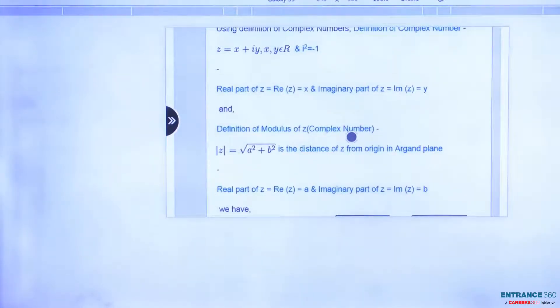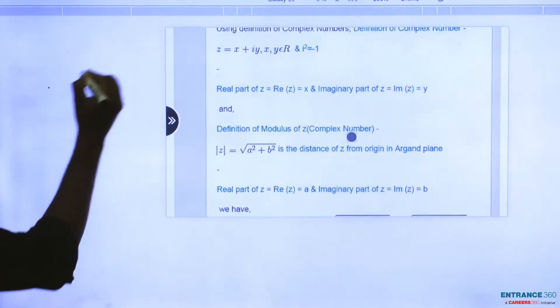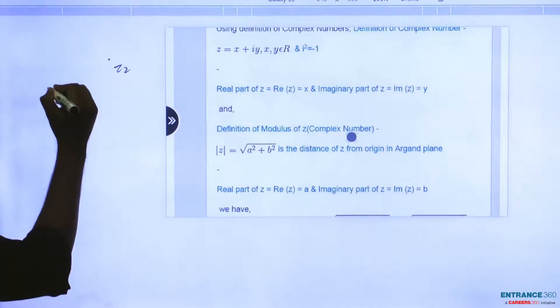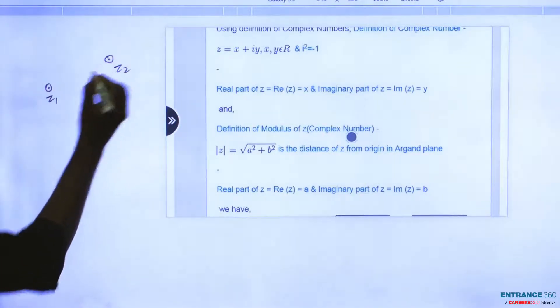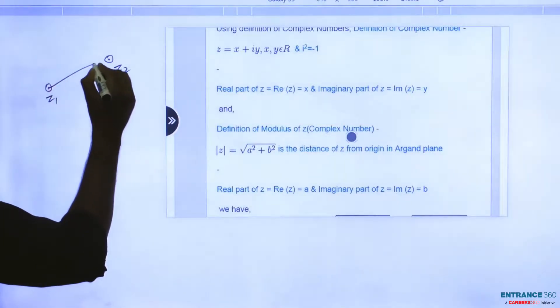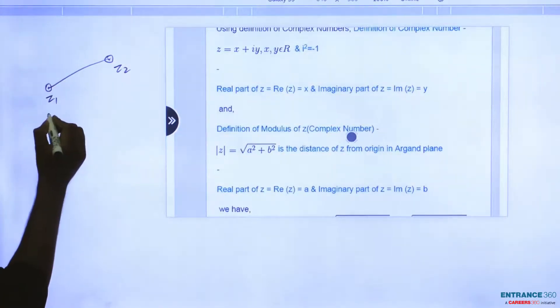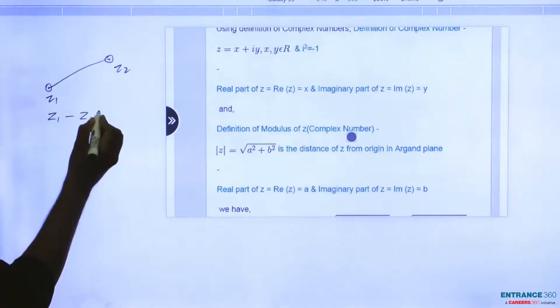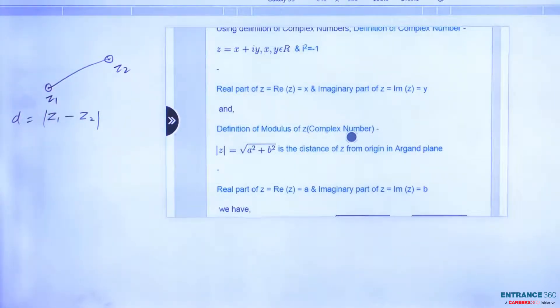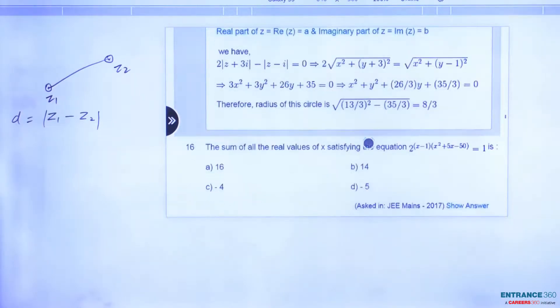Here using mainly one concept, distance between two complex numbers. If this is the point z1, this is a complex number z1, this is a complex number z2. If we have to find this distance, then you can write here z1 minus z2. This is the concept we are using here to solve this equation.